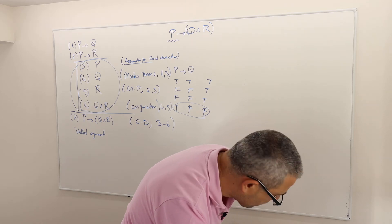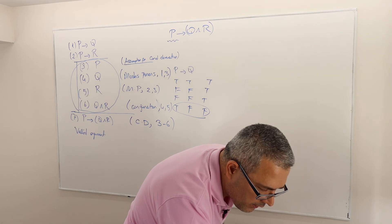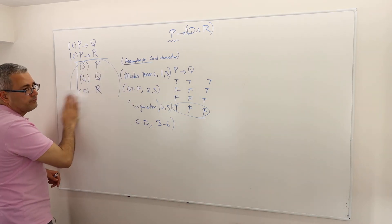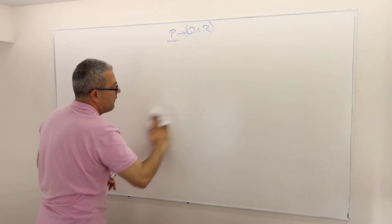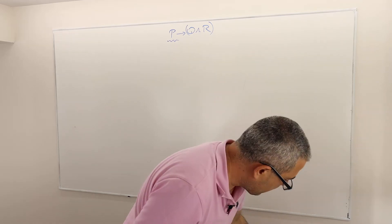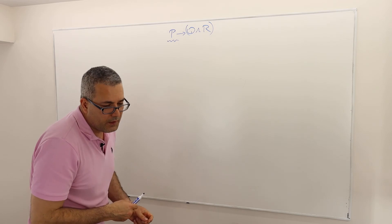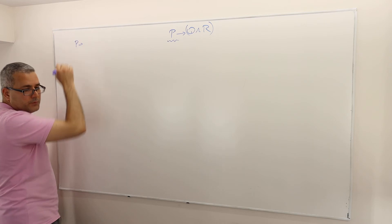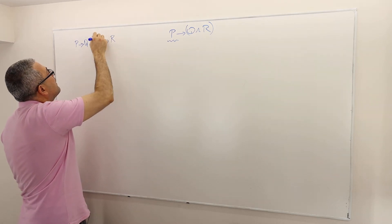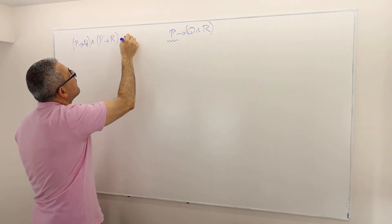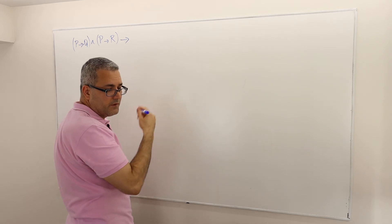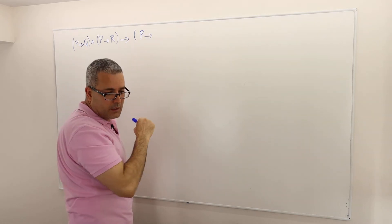Let me prove one more — 5.2.2. So what does this argument say? It says P implies Q and P implies R implies P implies Q and R. This is a theorem, by the way — I want to prove this theorem.